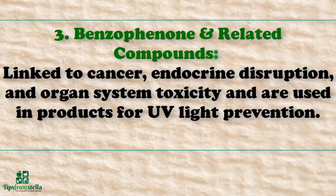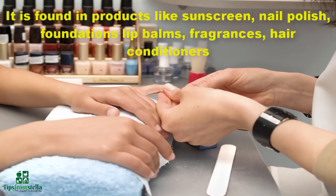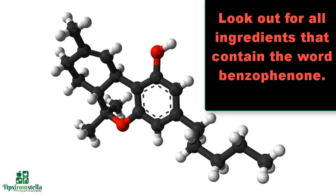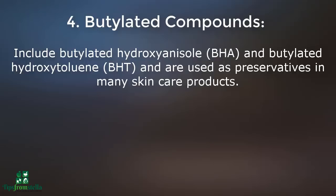Number three: benzophenone and related compounds. These are linked to cancer, endocrine disruption, and organ system toxicity, and are used in products for UV light prevention. Found in sunscreen, nail polish, foundations, lip balms, fragrances, hair conditioners, hair sprays, hair moisturizers, and shampoos, among others. Look hard for ingredients that contain the word benzophenone.